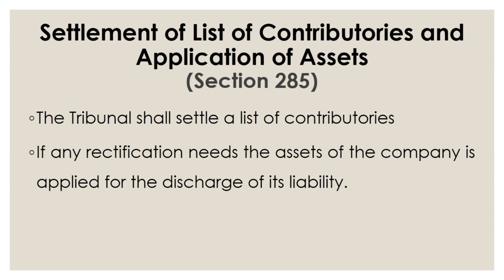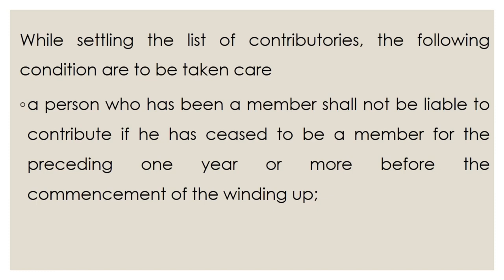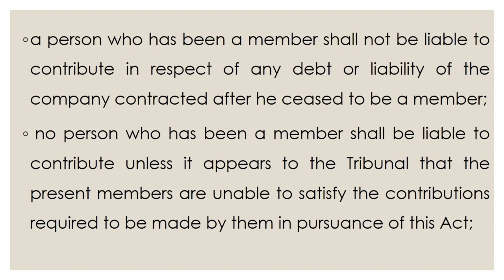Next is statement of list of contributors and application of assets, mentioned under section 285. After all these procedures, the tribunal makes a list of contributors of the company. If any rectification is needed, the asset of the company is applied to discharge those liabilities. While settling the list of contributors, the following condition is taken care of: a person who has been a member shall not be liable to contribute if he has ceased to be a member for the preceding one year or more before the commencement of the winding up.